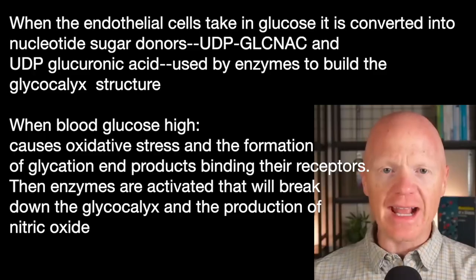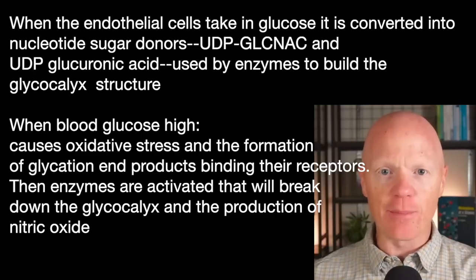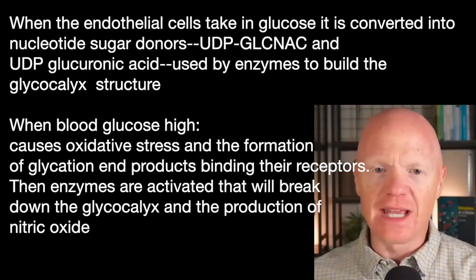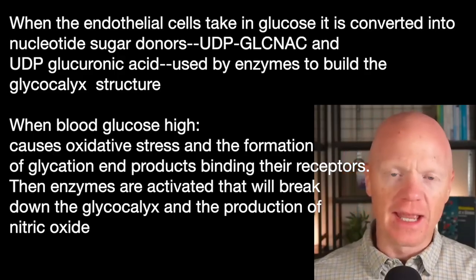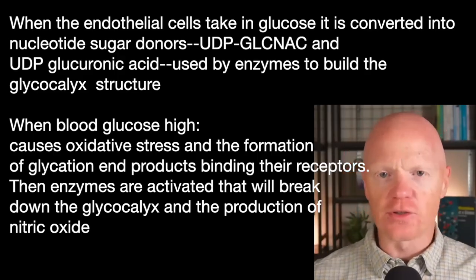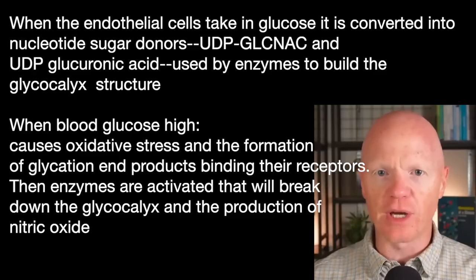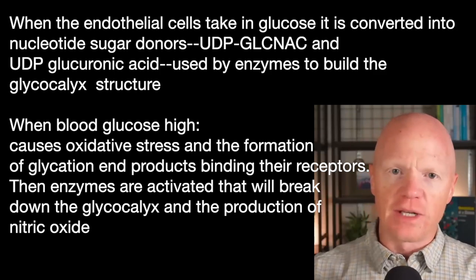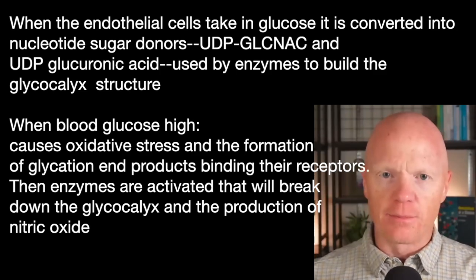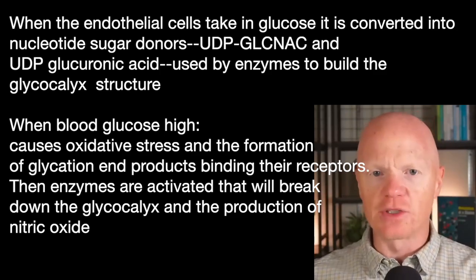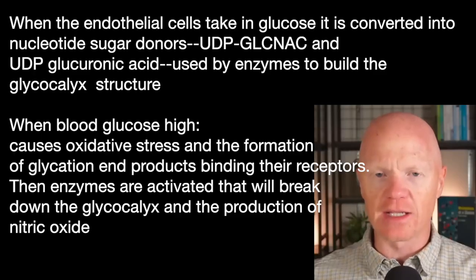And when RAGE signaling is up, it activates enzymes that will break down the glycocalyx — like heparinases, hyaluronidases, and metalloproteinases — and it will in turn also blunt the production of nitric oxide. So it's almost as if the brick factory running inside the endothelium has a demolition crew on the outside chipping away at the glycocalyx.